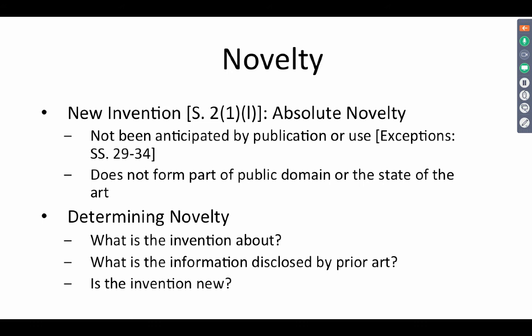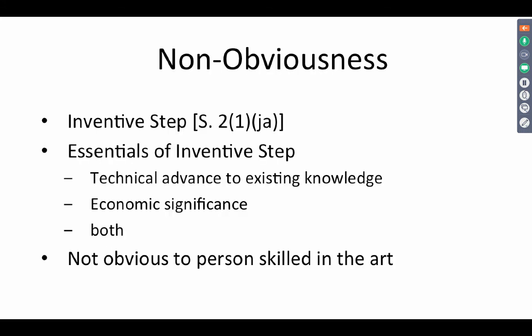In determining novelty, you will first ask what the invention is about, what information is disclosed in the prior art, and then demonstrate that the invention is new. Regarding obviousness: in India it has two extra requirements — it should be a technical advance over existing knowledge, and/or it should involve something of economic significance. Together with one or both of those elements, it should also not be obvious to a person skilled in the art — something which will be explained in greater detail in classes to come.